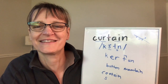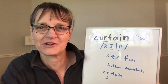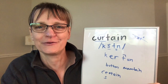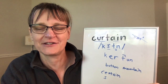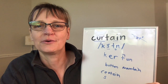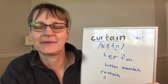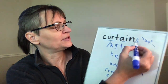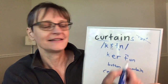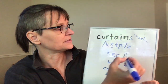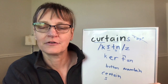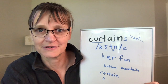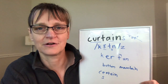Once I can say 'curtain' by itself, I want to start trying to use it in some short phrases so I can say it naturally and fluently in everyday speech. I'd like to get some new curtains for the window. When I make it plural with the S, it has the Z sound — 'curtains.' The curtains are open. Those are nice curtains. The curtains are closed.